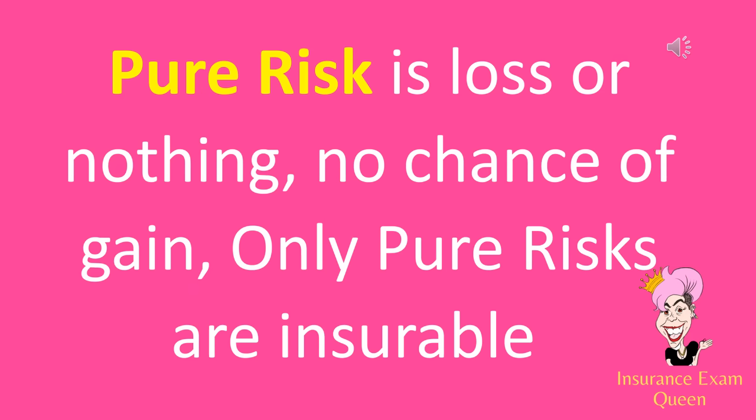Pure risk is loss or nothing — no chance of gain — and only pure risks are insurable. This means either nothing happens or something bad happens: either you crash your car or you don't, either the house burns down or it doesn't. In a pure risk there is nothing to gain. Insurance companies will only cover pure risks; you cannot get insurance on a speculative risk. Pure risk is loss or nothing, no chance of gain, only pure risks are insurable.